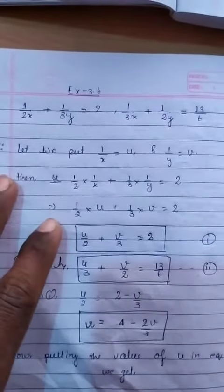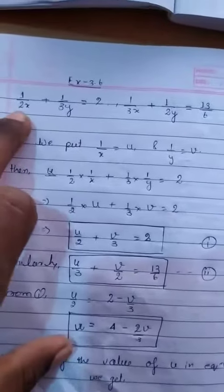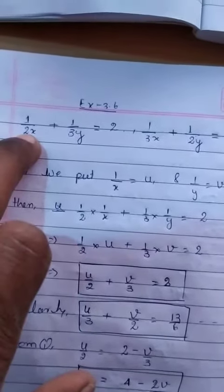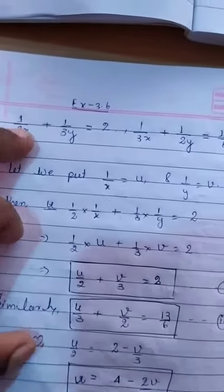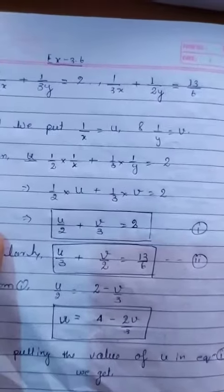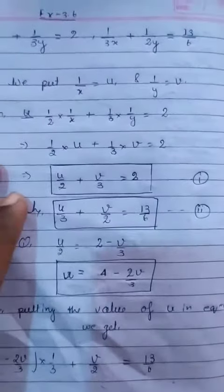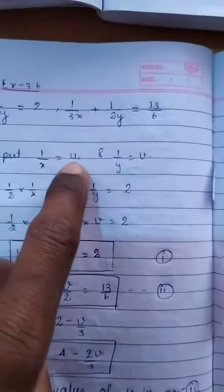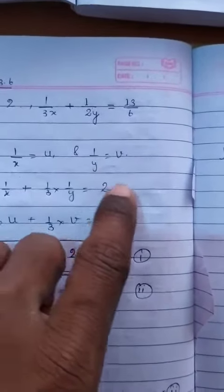So we have to convert it in the form of a linear pair. Means to say we have to bring this x in the numerator. Means to say we have to transform this equation. So how it is done? We replaced 1 upon x in the form of u and 1 upon y in the form of v.